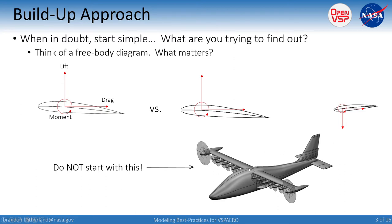Here we've got the outline of the common research model for the X57. This one's the simple version that just has actuator discs. Under no circumstances should you be starting with this. If you load this model up and just hit go on VSP Aero, it's going to crash. It's still a relatively complex thing to set up and you might not know why it broke. We'll get into some of the why in this presentation.